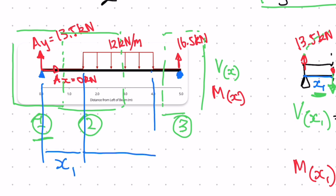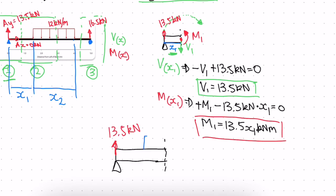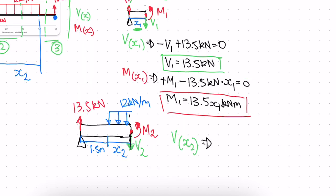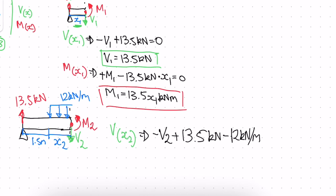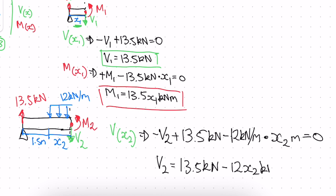Now let's find X2. We redraw the beam with the distributed load of 12 kilonewtons per meter. We have negative shear V2, positive moment M2, distance X2, and a distance of 1.5 meters to the start of section 2. For the shear function: negative V2 plus 13.5 kilonewtons minus 12 kilonewtons per meter times X2 equals zero, so V2 equals 13.5 minus 12·X2 kilonewtons.